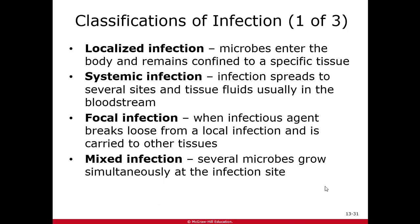A systemic infection means it spreads to different parts of the body, usually by getting into the bloodstream. A focal infection is when an agent breaks loose from a localized infection and goes to other tissues — a focal infection can become a systemic infection. A mixed infection is when several microorganisms are all growing at the same infection site — an open wound touching the floor will likely produce a mixed infection with many organisms.